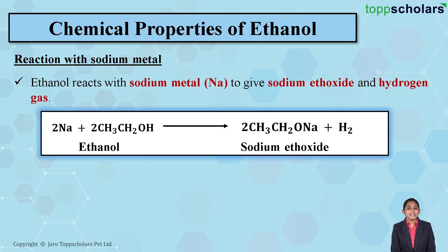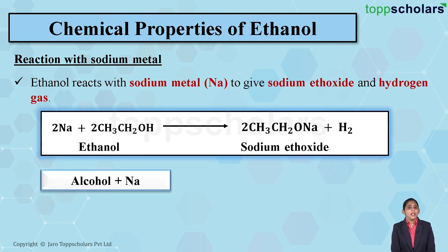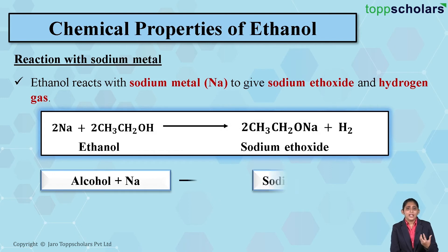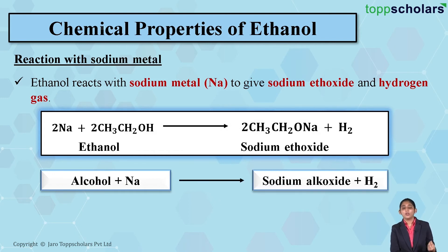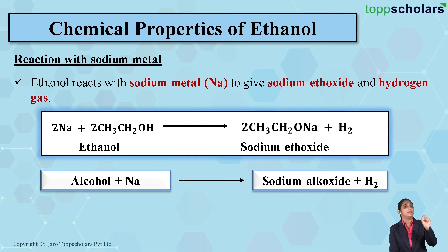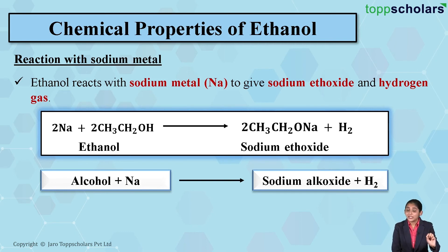Here you can see the reaction wherein sodium reacts with ethanol and you get two products: sodium ethoxide along with the liberation of hydrogen gas. Generally, whenever we take an alcohol and react it with sodium metal, it gives two products — sodium alkoxide along with liberation of hydrogen gas. So remember: treating sodium metal with ethanol gives sodium ethoxide and hydrogen gas.